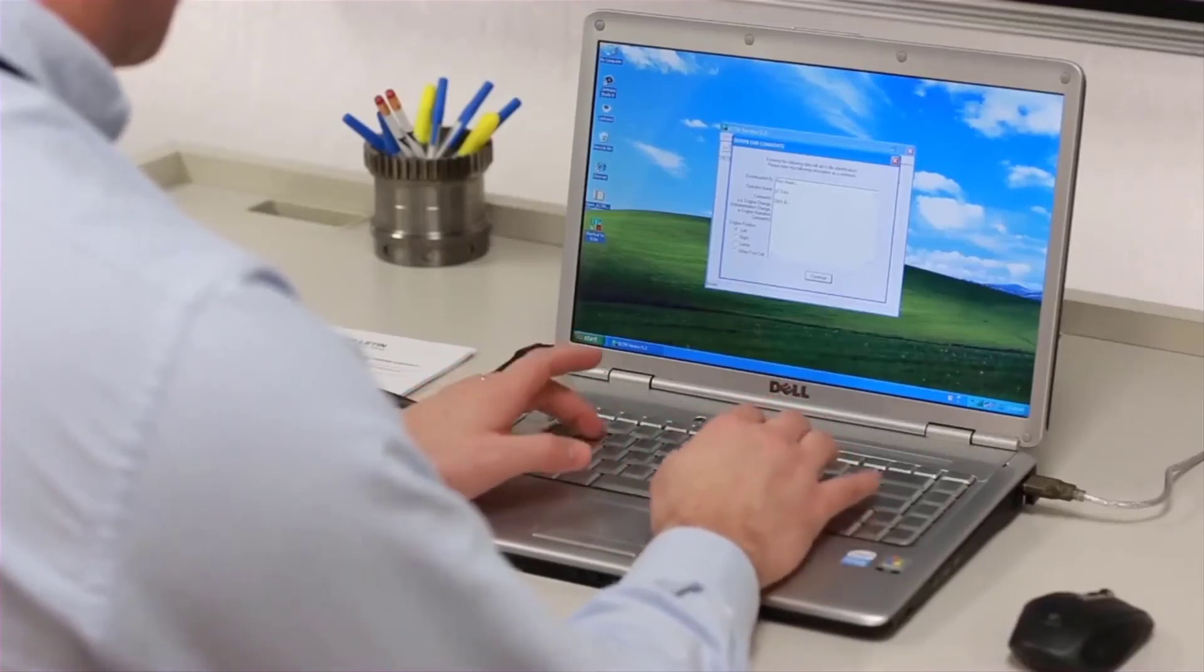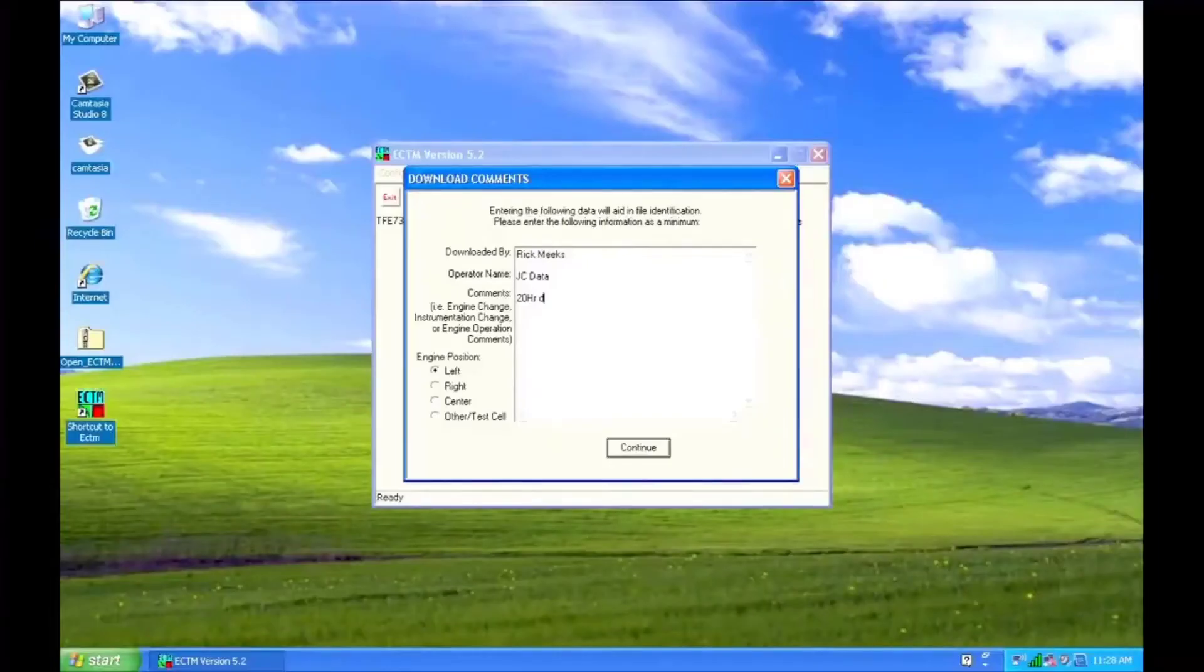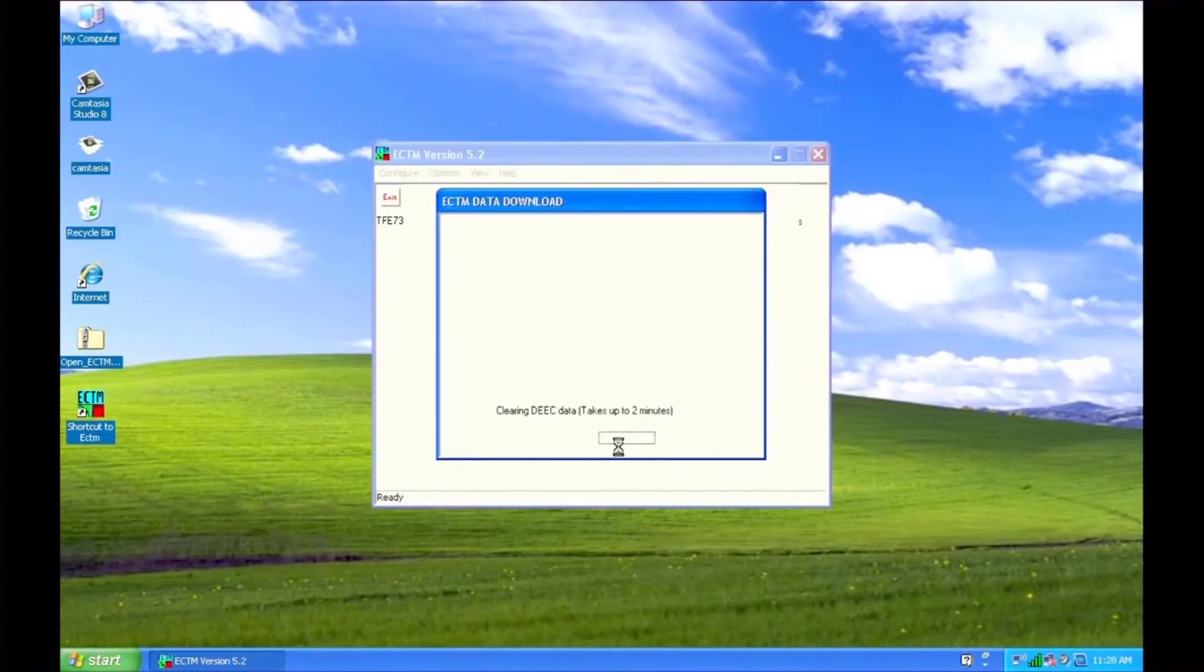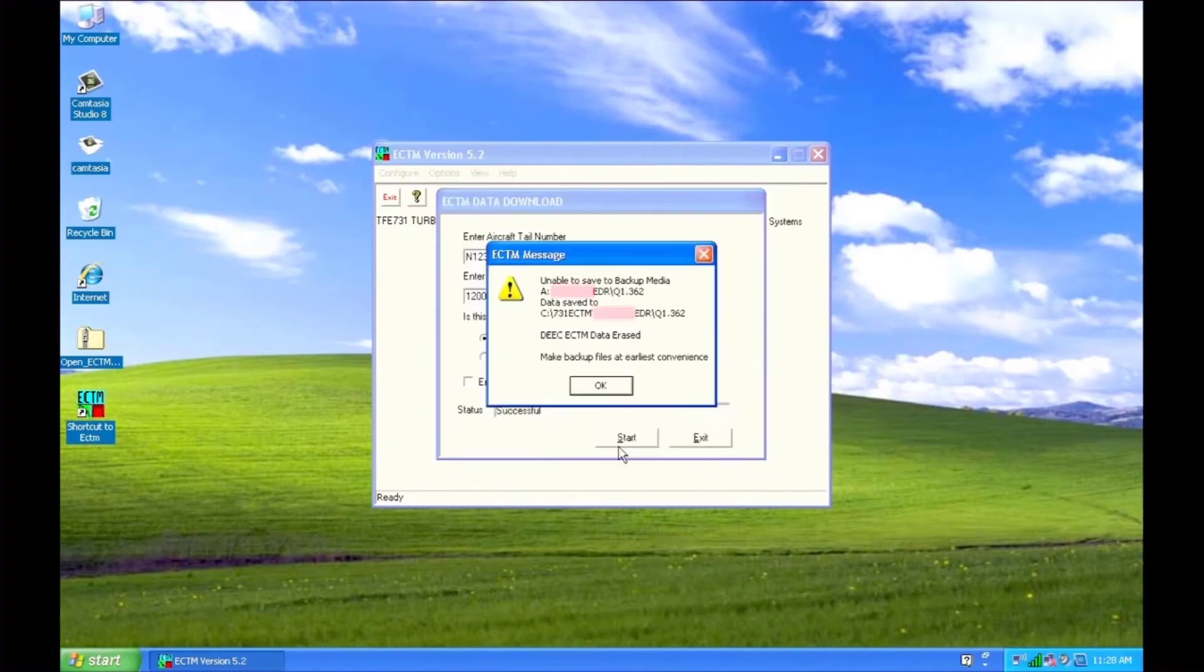Leave the engine build data box unchecked and start the download. Fill in the information in the download comments window. Select the engine position and continue.